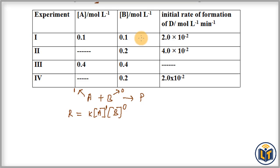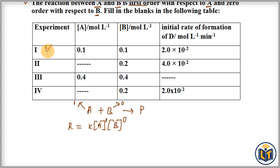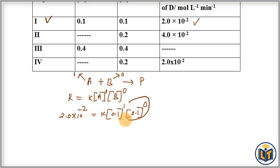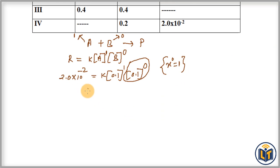First we need to find the rate constant K, then we can find the unknown concentrations. In the first experimental data, the concentration of both reactants and the rate of reaction are given. Plugging into the rate law expression: 2.0 × 10⁻² = K × [0.1]^1 × [0.1]^0. The [B]^0 term becomes 1 because any value raised to the power of zero equals 1.